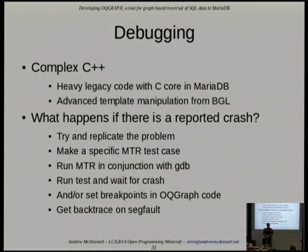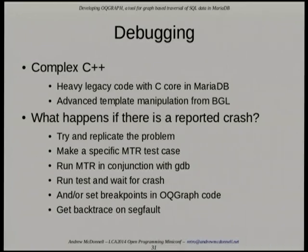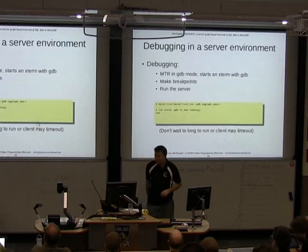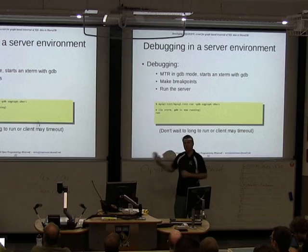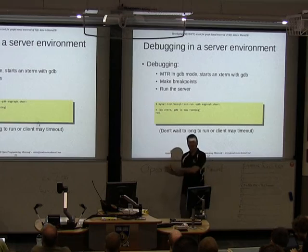If your database crashes during a SQL test or a user hits a crash, you can write MTR code to replicate the situation, but you still need to debug it. The OQ Graph code uses Boost Graph Library, which is heavy on templates — making for interesting debugging. It's also directly interfaced into the MySQL core for accessing underlying tables, so there's a lot of legacy C code in there. The database is usually a separate process from your debugging session — your program executes SQL to the database, and it's the server that crashes.